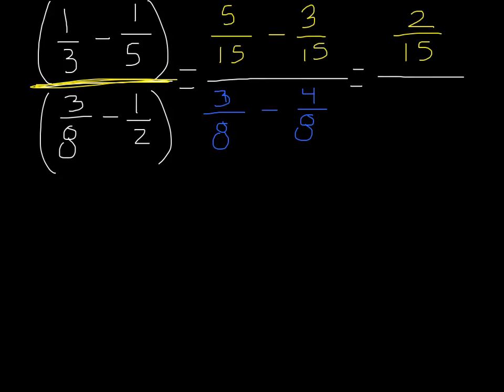On the bottom, I am going to be subtracting 3/8 minus 4/8, and that gives me negative 1/8. Now I am left with just two fractions being divided by each other.